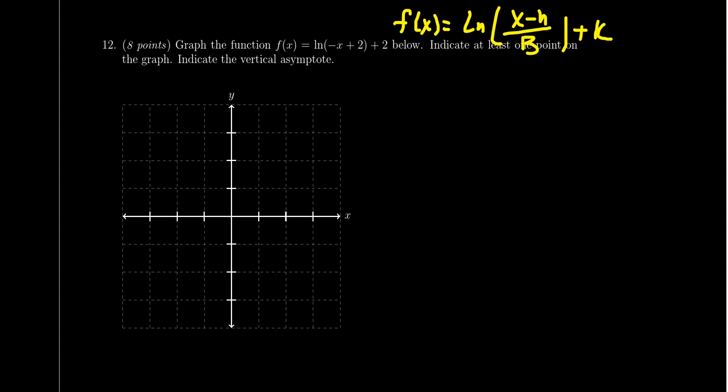Some things I can see very quickly is that there's a coefficient attached to the x, we have to factor that thing out. So f(x) is going to look like when we factor it the natural log of negative times (x minus 2), like so plus 2.